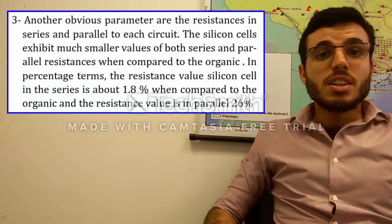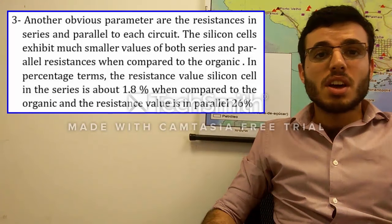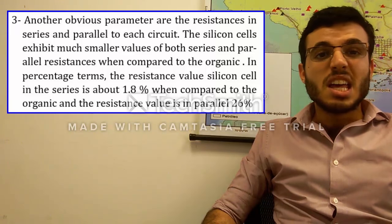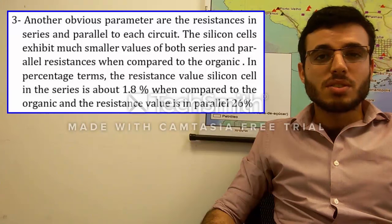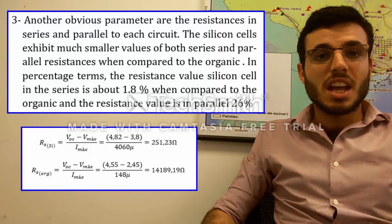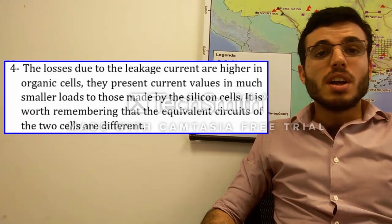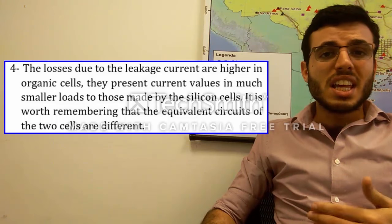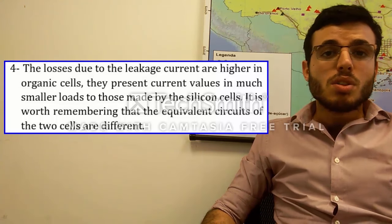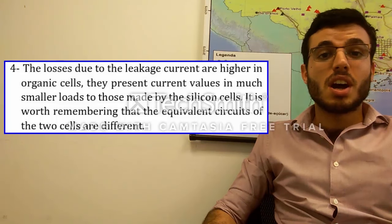Third: another notable parameter is the resistances in series and parallel for each circuit. The silicon cells exhibit much smaller values of both series and parallel resistances when compared to the organic. In percentage terms, the series resistance value of the silicon cell is about 1.8% when compared to the organic, and the parallel resistance value is 26%. Fourth: the losses due to leakage current are higher in organic cells, presenting current values at much smaller loads compared to those of the silicon cells. It is worth noting that the equivalent circuits of the two cells are different.